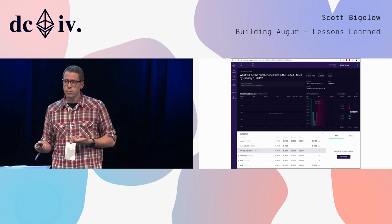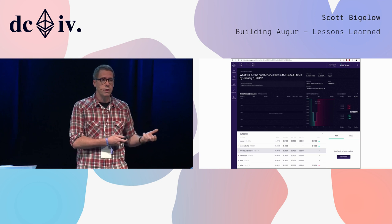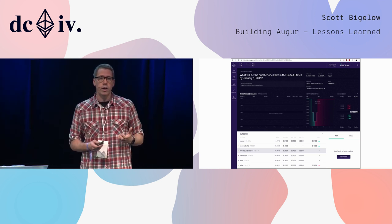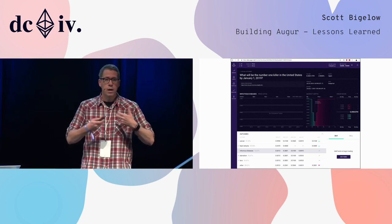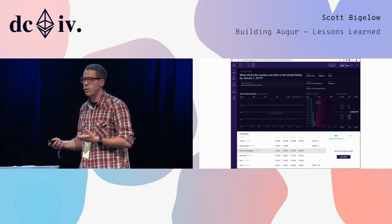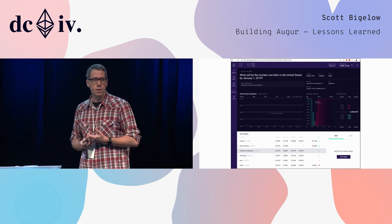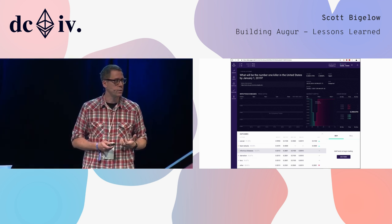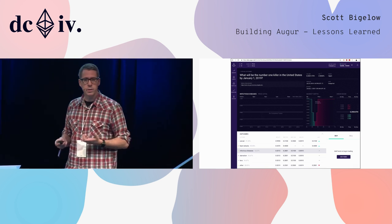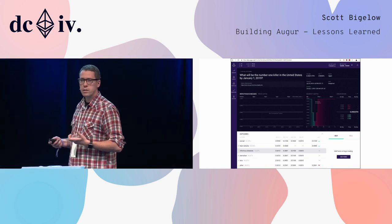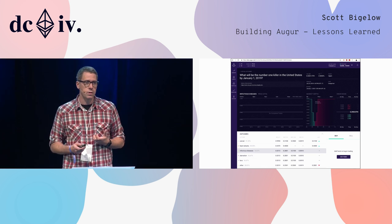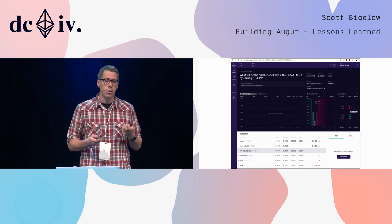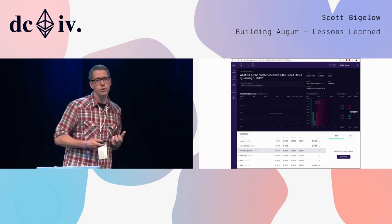Before that resolution, users can stake ETH on what they believe the correct outcome to be. After resolution, the market creator is responsible to come back and inform the blockchain what the real-world outcome was. But of course there's no reason to trust this market creator to give you the correct answer — and that's where Augur really comes in. Augur has created a system of economic incentives such that REP holders, holders of the Augur REP token, are incentivized to come and dispute answers that are incorrect.